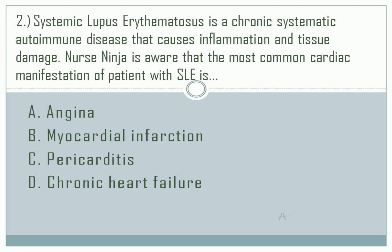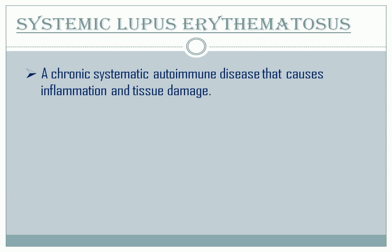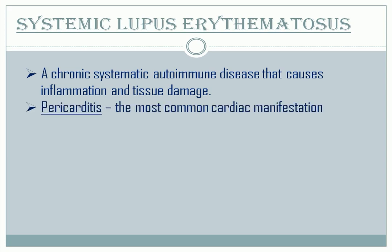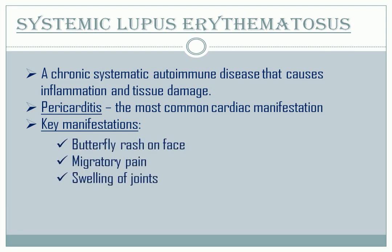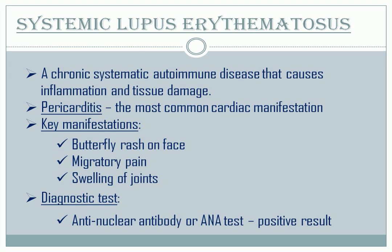Question number two. The correct answer is letter C, Pericarditis. Systemic lupus erythematosus is a chronic systemic autoimmune disease that causes inflammation and tissue damage. The most common cardiac manifestation in patients with SLE is pericarditis. Key manifestations include butterfly rash on the face, migratory pain, and swelling of joints. The diagnostic test is anti-nuclear antibody, or ANA, which is the most sensitive diagnostic test to confirm SLE and will show a positive result.